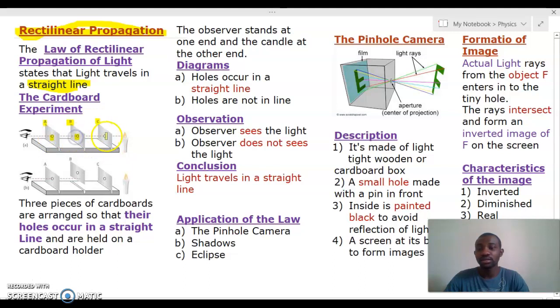We make three holes at the exact centers. Then we need a cardboard holder. We put them on the cardboard holder. Then the observer stands at one end of the cardboards whilst a light source, here we've chosen a candle, is placed at the other end.